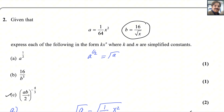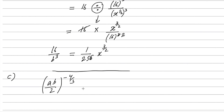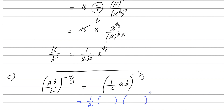For the last part c, we need to find (ab/2) to the power minus 4 over 3. To solve this, we replace the values of a and b. We can write it as (1/2 × a × b) to the power minus 4 over 3. Now substitute: a is 1 over 64x squared and b is 16 over the square root of x.